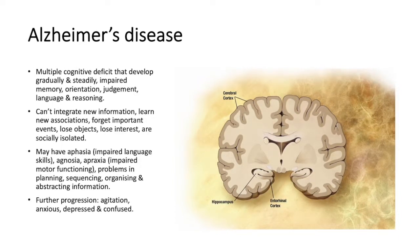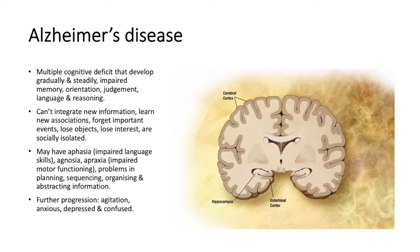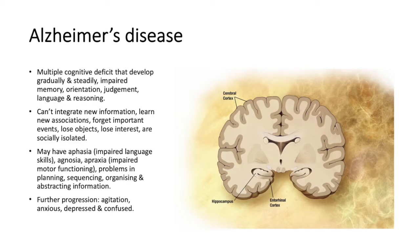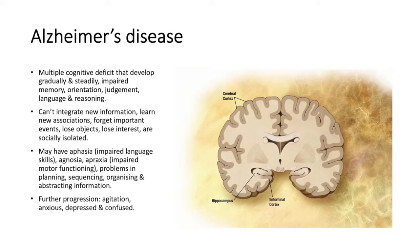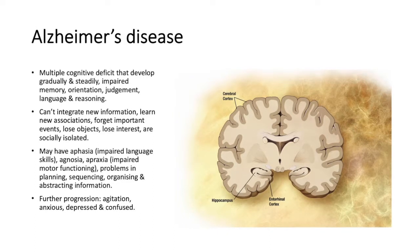People with Alzheimer's have problems in planning, sequencing, organizing, and abstracting information. Further progression includes agitation, anxiousness, depression, and confusion.